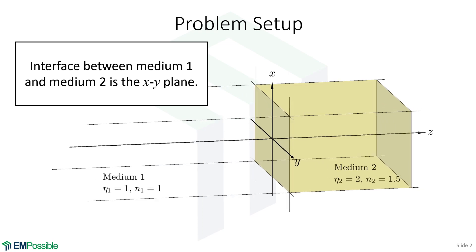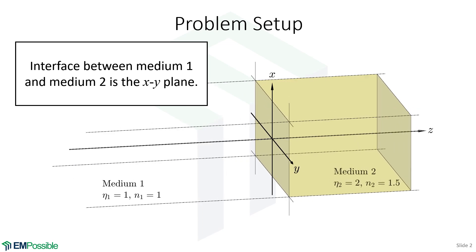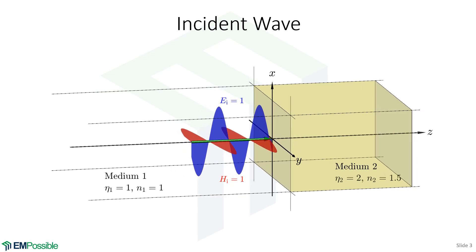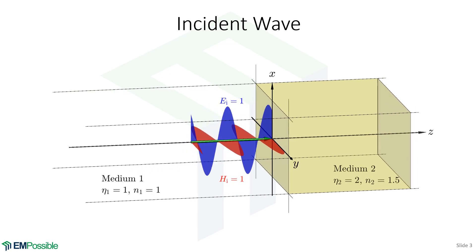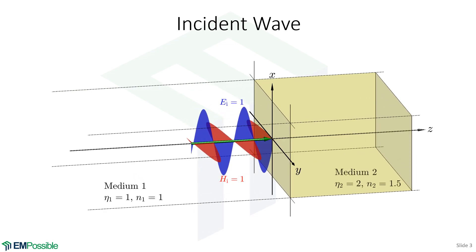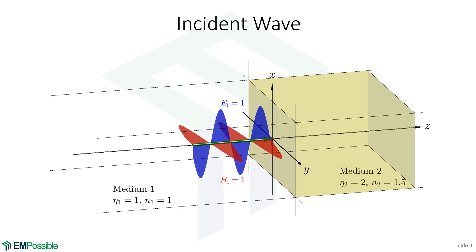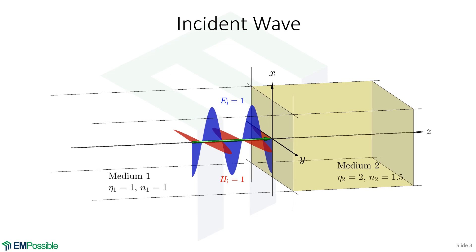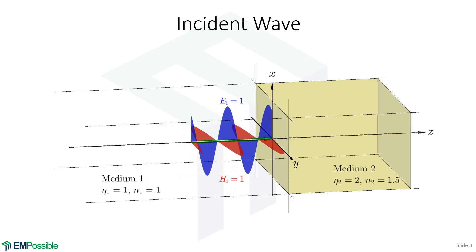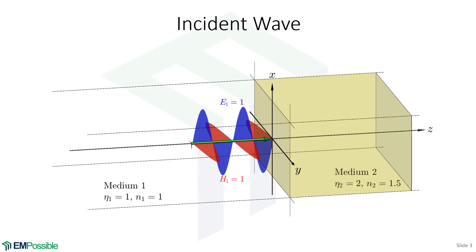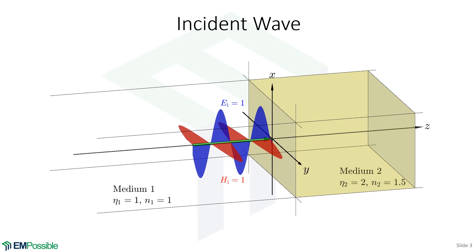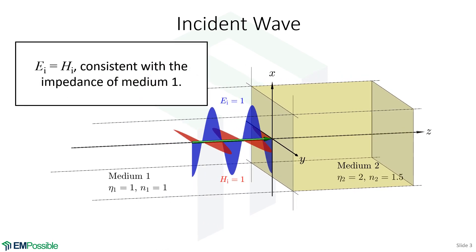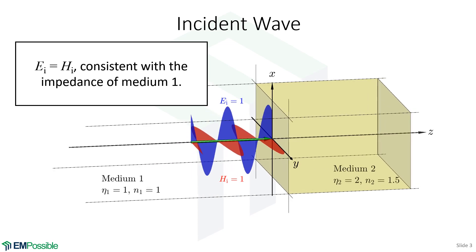Now let's apply a wave to this interface. We have an electromagnetic wave, so it has both an electric and a magnetic field component. In this case, the electric fields are oscillating in the x direction. The magnetic fields have to be perpendicular to that, so they're oscillating in the y direction. And because the impedance is one, the electric and magnetic fields have the same amplitude.